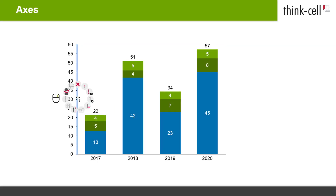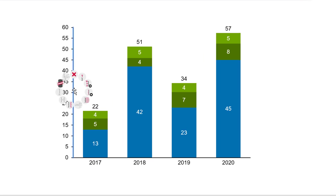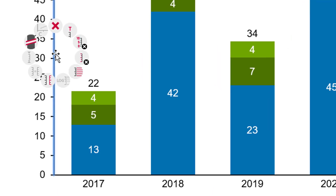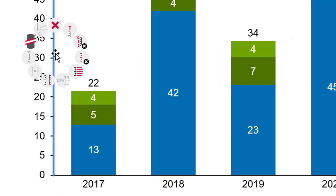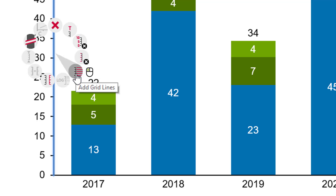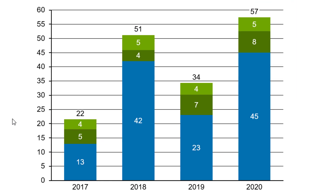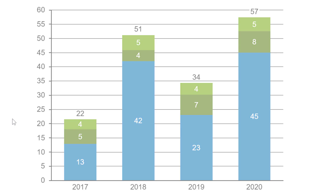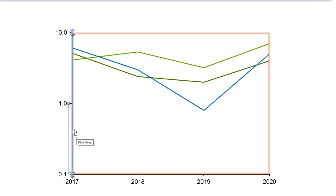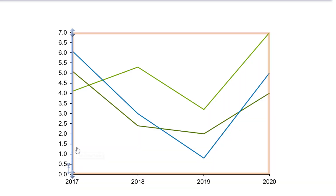When you right-click on a value axis, a context menu will offer a variety of options to edit the axis. You can, for instance, add or delete an axis title, tick mark labels, tick marks, or grid lines. If appropriate, you may also toggle between a logarithmic and linear scale axis.